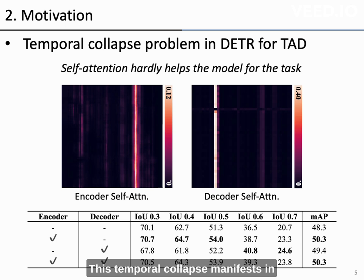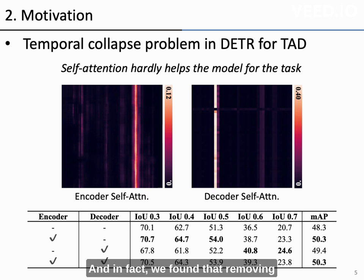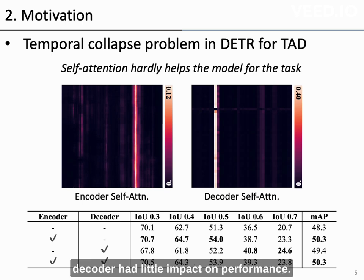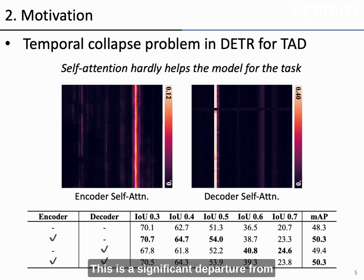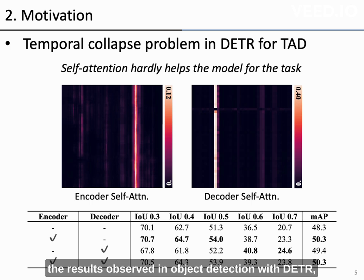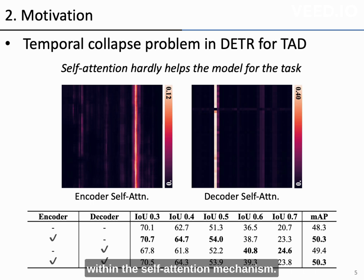This temporal collapse manifests in a paradigm as shown in the figure, and in fact, we found that removing the self-attention in both the encoder and decoder had little impact on performance. In other words, it suggests that the self-attention modules are providing little assistance to the current model. This is a significant departure from the results observed in object detection with DTR, highlighting that the main issue currently lies within the self-attention mechanism.